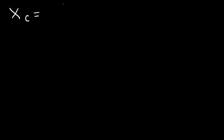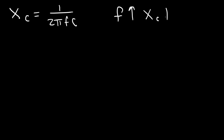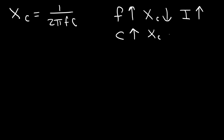Now let's discuss the capacitive reactance formula: XC equals 1 over 2 pi FC. If you increase the frequency, the capacitive reactance decreases since F is in the denominator, and as reactance decreases, the current increases. Likewise, if you increase the capacitance, the capacitive reactance decreases, also causing an increase in current for an AC signal.